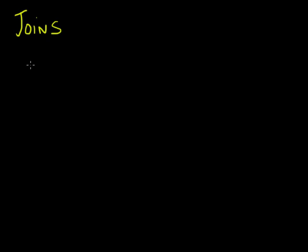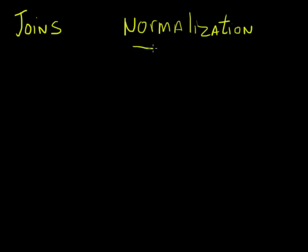Why would we ever have to pull information from two different tables simultaneously? Well, the whole thing goes into this concept of normalization. Normalization is really just a way of saying we want to try to eliminate as much redundancy in our database as we possibly can. We break the information into different tables, and that's part of what's considered good database design.